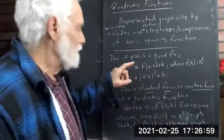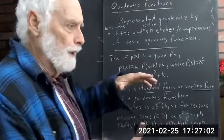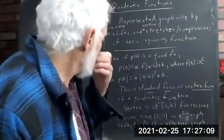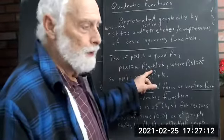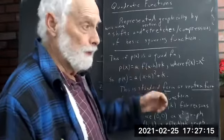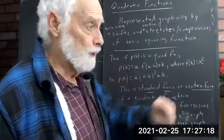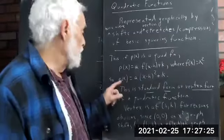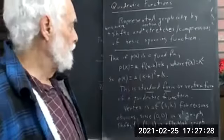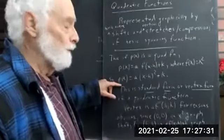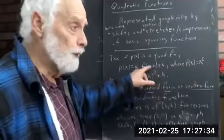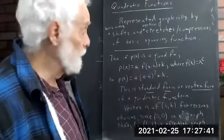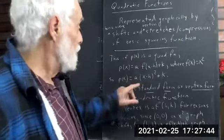This is always a vertical stretch or compression by factor a — and a includes reflection if a is negative, you reflect across the x-axis. Then a·f(x−h) shifts it h units horizontally, and k shifts it k units vertically. Since f(x) = x², f(x−h) = (x−h)², so a·f(x−h)+k becomes a(x−h)²+k. That is the general quadratic function.